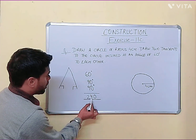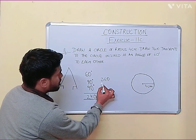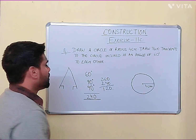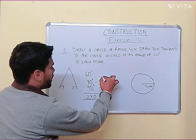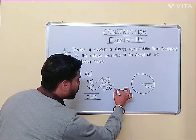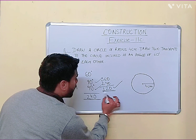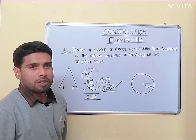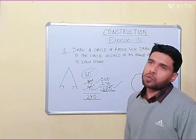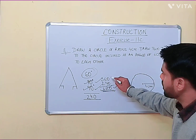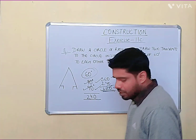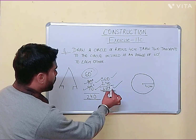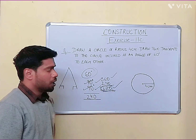In a quadrilateral, the sum of all angles is 360 degrees. So from 360 you subtract 240, giving 120 degrees. That means you have to construct the angle at the center as 120 degrees, and the two tangent angles will each be 90 degrees. Then the angle between the tangents will be 60 degrees, because 60 plus 90 plus 90 plus 120 equals exactly 360 degrees.